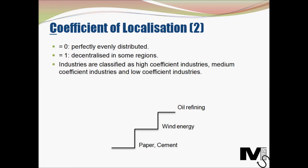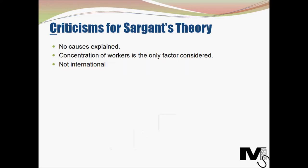Obviously there were a lot of criticisms for Weber's theory, and just like Weber's, Sargent's theory also drew its fair share of criticisms. The most prominent criticism is that it only helps in figuring out the current state of distribution of industries — it doesn't elaborate on the causes of such a distribution. What are the actual reasons why certain industries are more concentrated in certain areas? It also doesn't take into consideration any factors other than the concentration of workers, and there could very well be other factors which can positively or negatively affect the presence of an industry in an area.